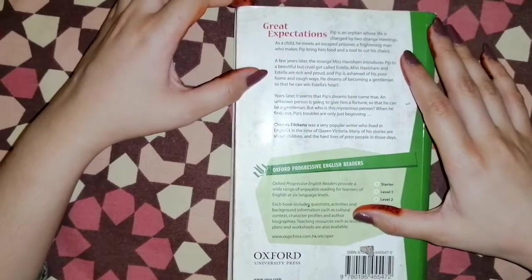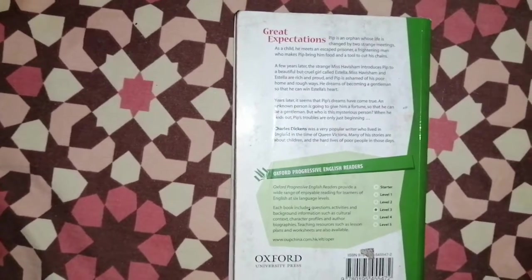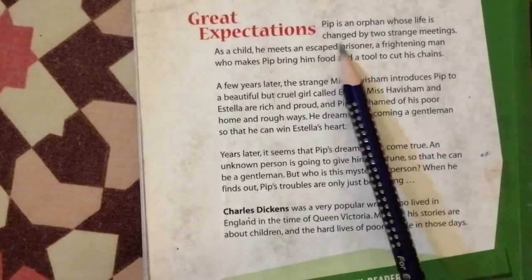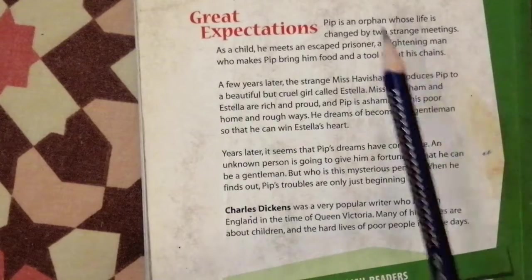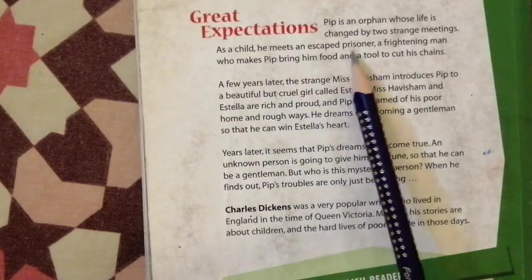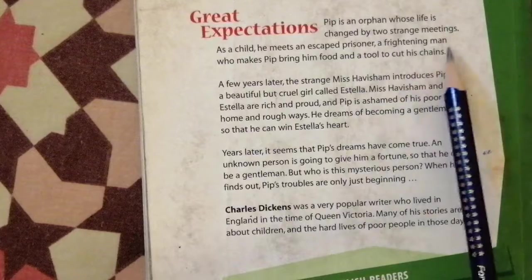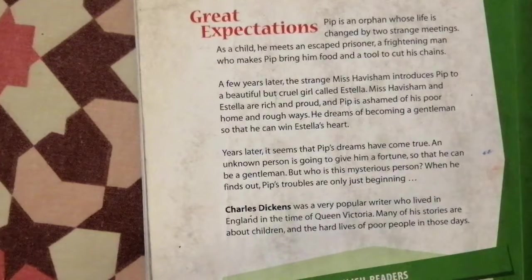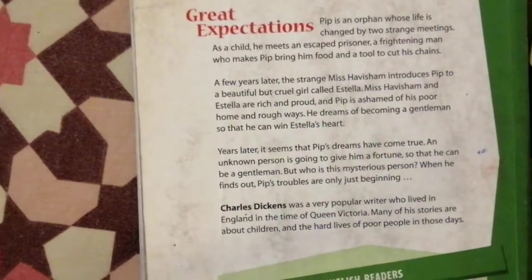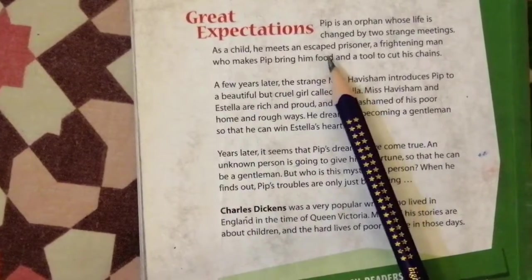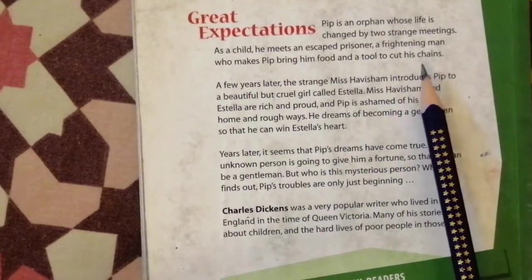Now here is a short review of the novel. Great Expectations: Pip is an orphan — meaning someone with no father or mother — whose life is changed by two strange meetings. As a child he meets an escaped prisoner, a frightening man who makes Pip bring him food and a tool to cut his chains.